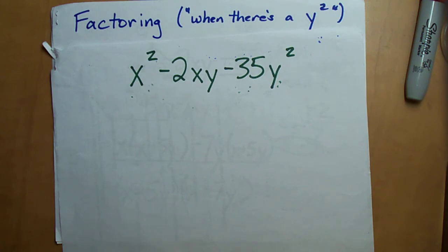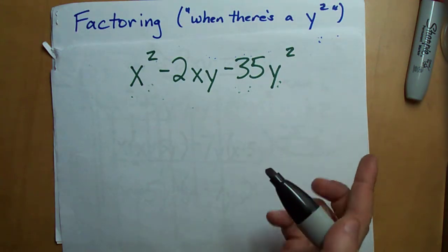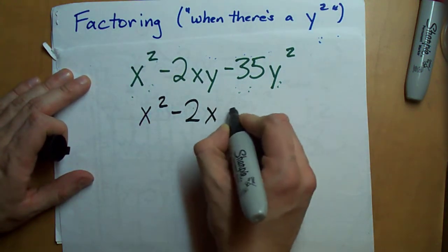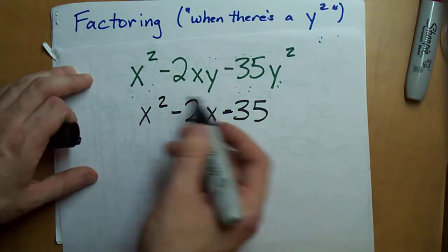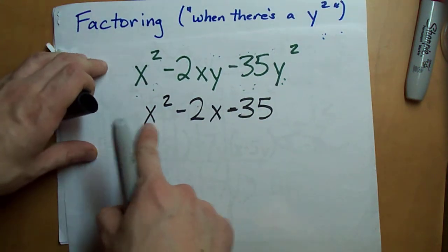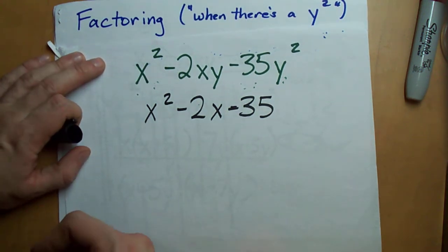Here's what I do when I'm given a question like this. I just pretend the y squared isn't even there. x squared minus 2x minus 35. There, that got rid of those y's. They're just gone.